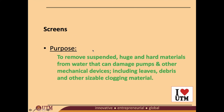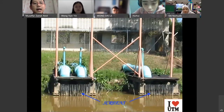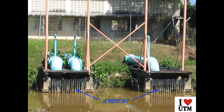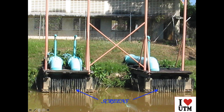The purpose of screens is to remove suspended or large hard materials from water that can damage pumps and other mechanical devices. Those materials could be leaves, debris, or any other sizable clogging material. The screen prevents huge materials like bricks, plastic bags, or big debris from entering the pump, because we do not want to damage the pump inside the pumping house. Those are the key things to learn in the water intake topic.